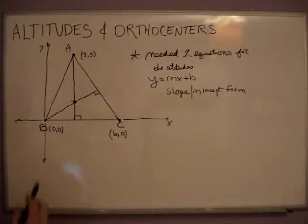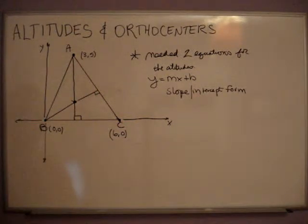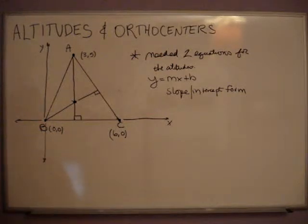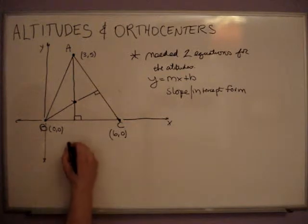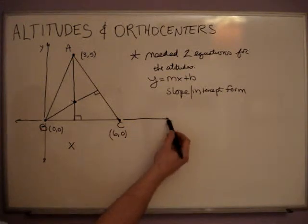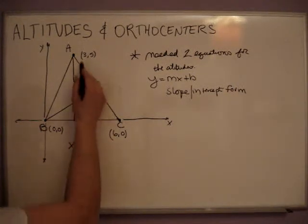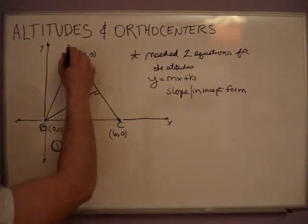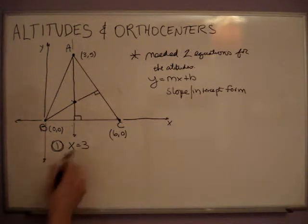So we need two equations of the line. We need an equation for this one and this one. Now this one through A is much easier. It's just a vertical line. And anytime you have a vertical line, the equation is x—because this is how I memorize it—it passes through the x-axis, so x, and then whatever that x value it crosses, which was three. So your first equation is the equation for this altitude, which runs through the triangle, which is x equals three.